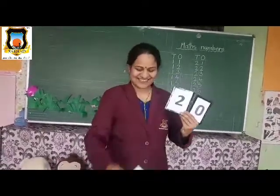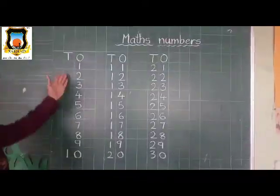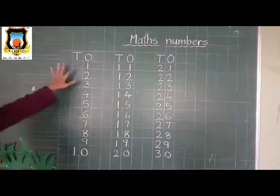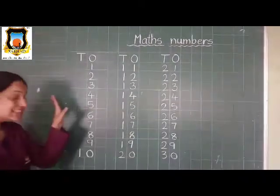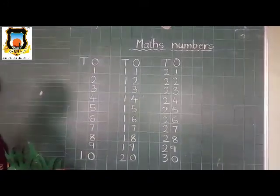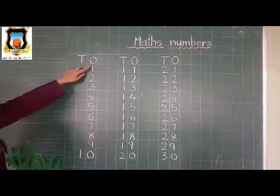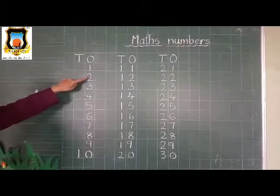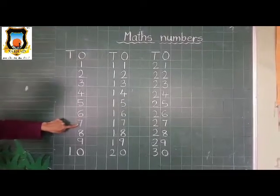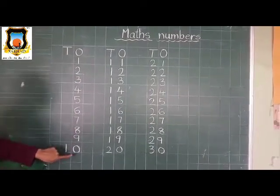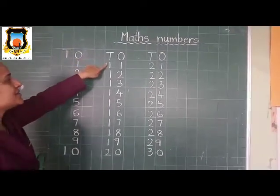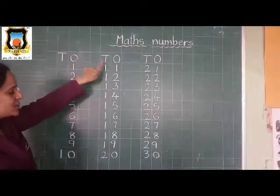Okay students, look at here, see the board. What I have written? 1 to 30 numbers. Kya likha hai? Maine 1 to 30 numbers likha hai. So now we will say these numbers together in sequence. Okay? Chala — yahan se 1 to 10 tak toh aapko sabko aata hai. Toh hum ab milke bolte hain. Okay? Start. 1, 2, 3, 4, 5, 6, 7, 8, 9, 10.